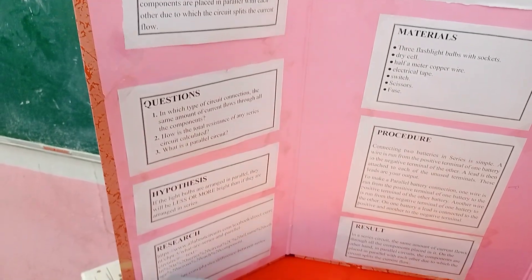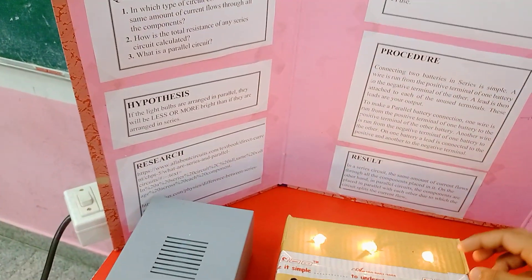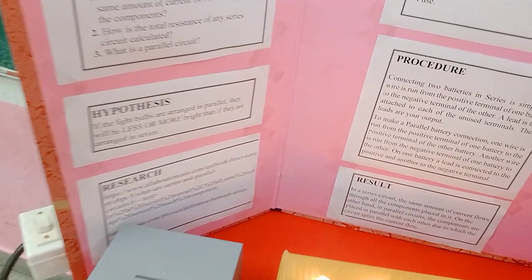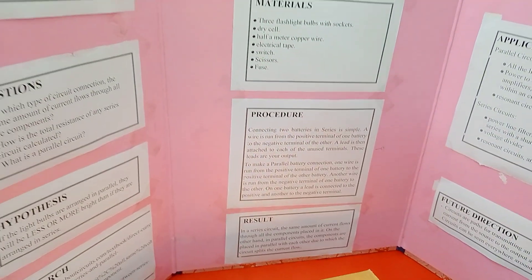The material required for this: three flashlight bulbs with sockets, dry cells, half a meter copper wire, electrical tape, switches, scissors, fuse.